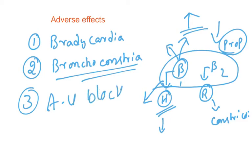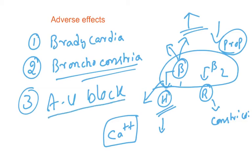AV block stands for atrioventricular block. Calcium is responsible for nerve conduction; when you reduce calcium levels, nerve conduction is also reduced. The conduction from atria to ventricle is blocked — that is called AV block. The fourth adverse effect is peripheral vasoconstriction.